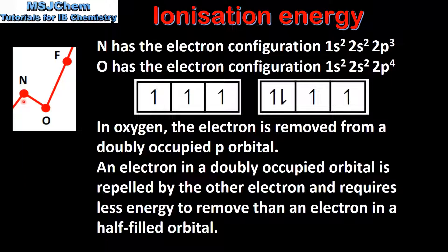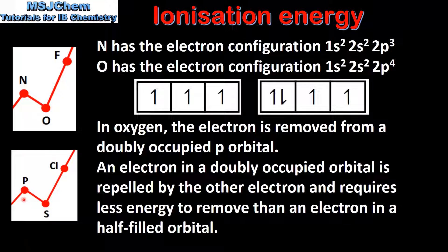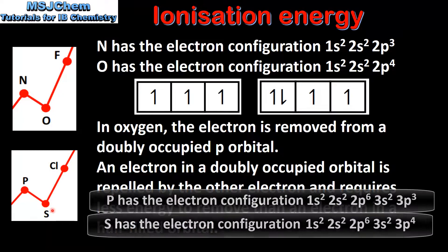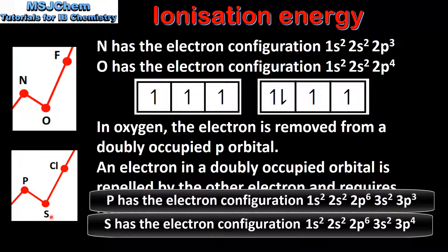This explains the decrease in ionization energy between nitrogen and oxygen. A similar explanation can be applied for the decrease in ionization energy between phosphorus and sulfur. These two atoms have their valence electrons in the 3p sub level. In sulfur the electron is removed from a doubly occupied p orbital. In phosphorus the electron is removed from a half-filled p orbital. Electrons in a doubly occupied orbital require less energy to remove than electrons in a half-filled orbital. This is due to the repulsion between the electrons.